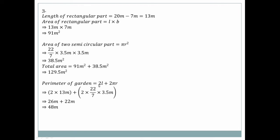For the perimeter of the garden, we use the circumference formula: perimeter = 13 meter + π × r = 13 + (22/7) × 3.5. Calculating: 22 × 0.5 = 11, plus 2 × 13 = 26, giving approximately 48 meters.